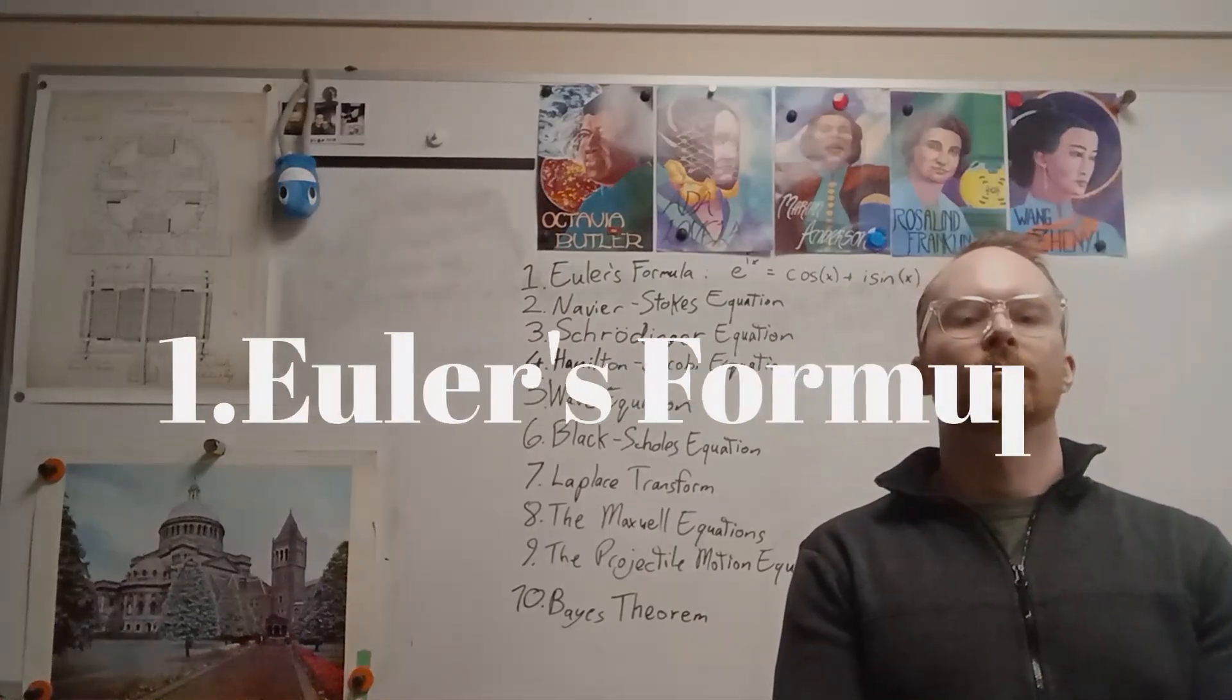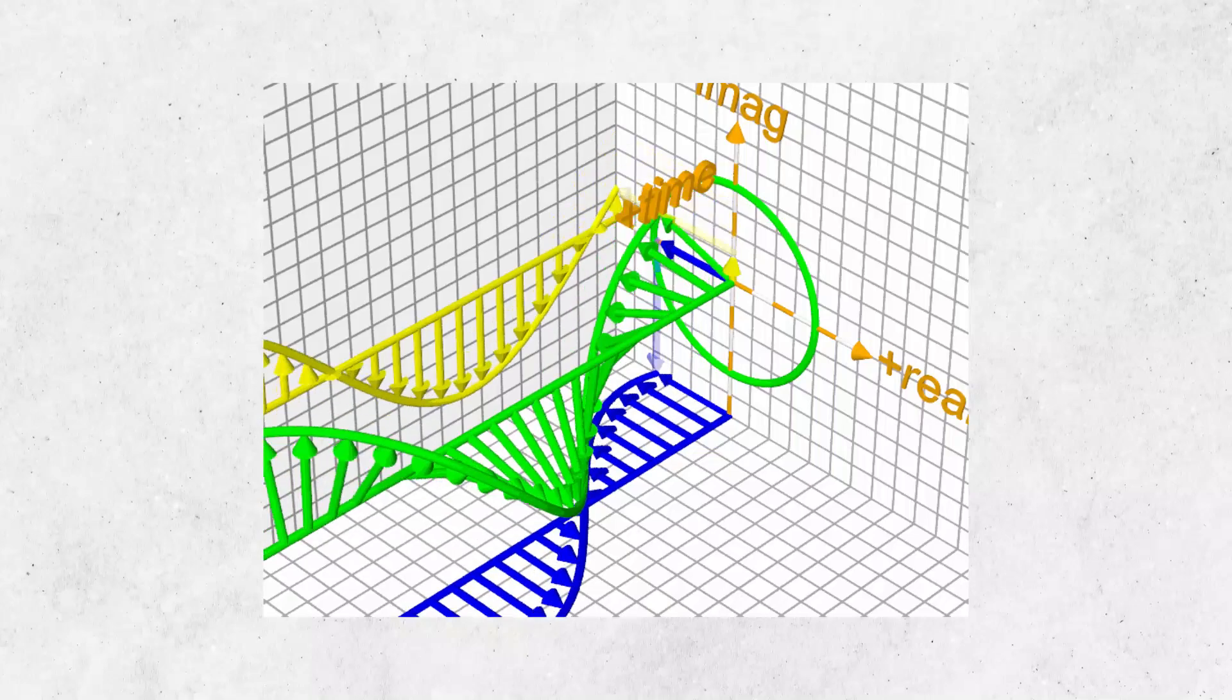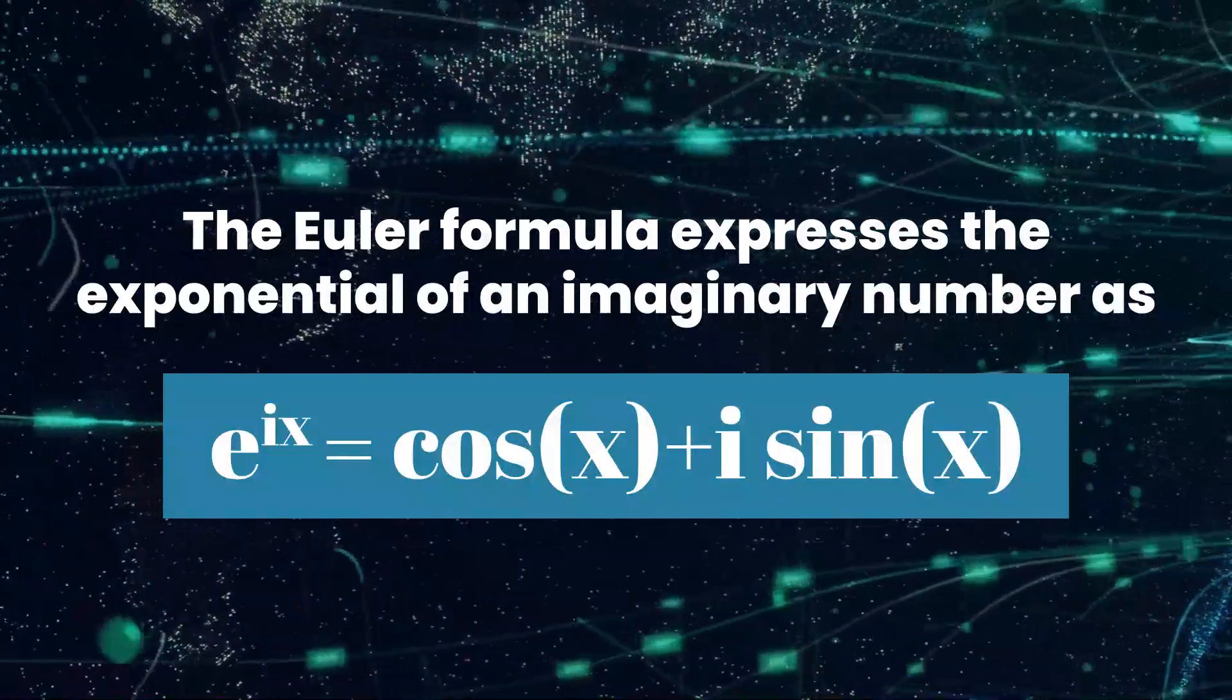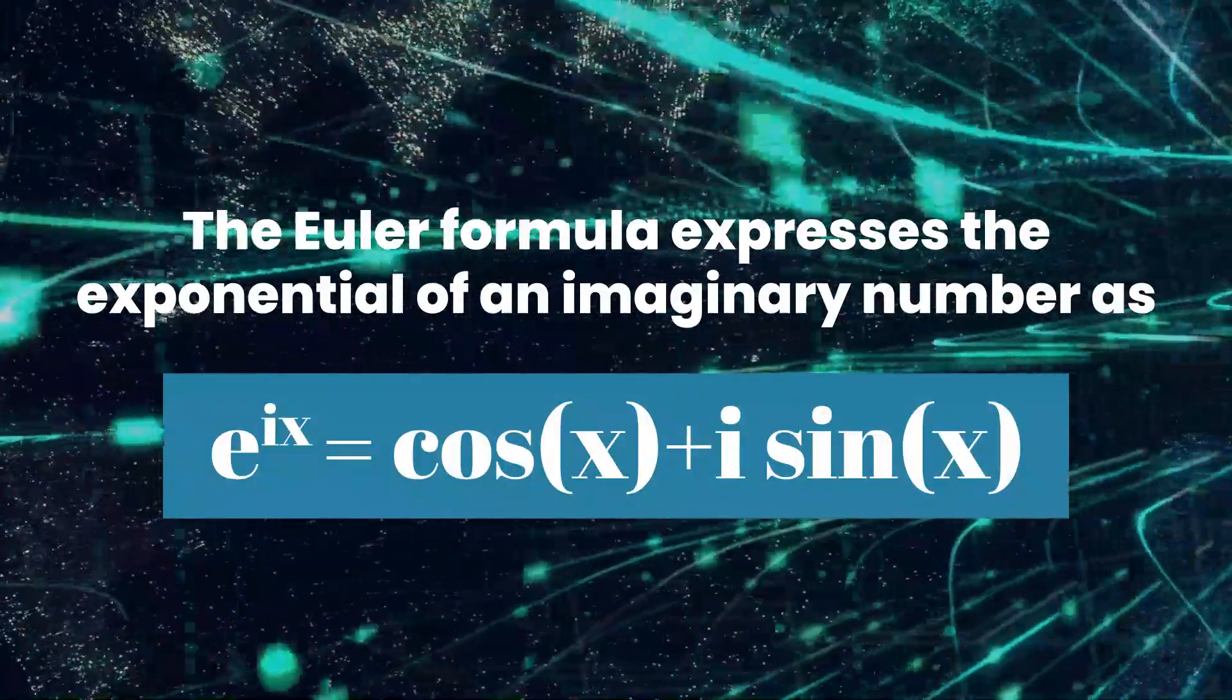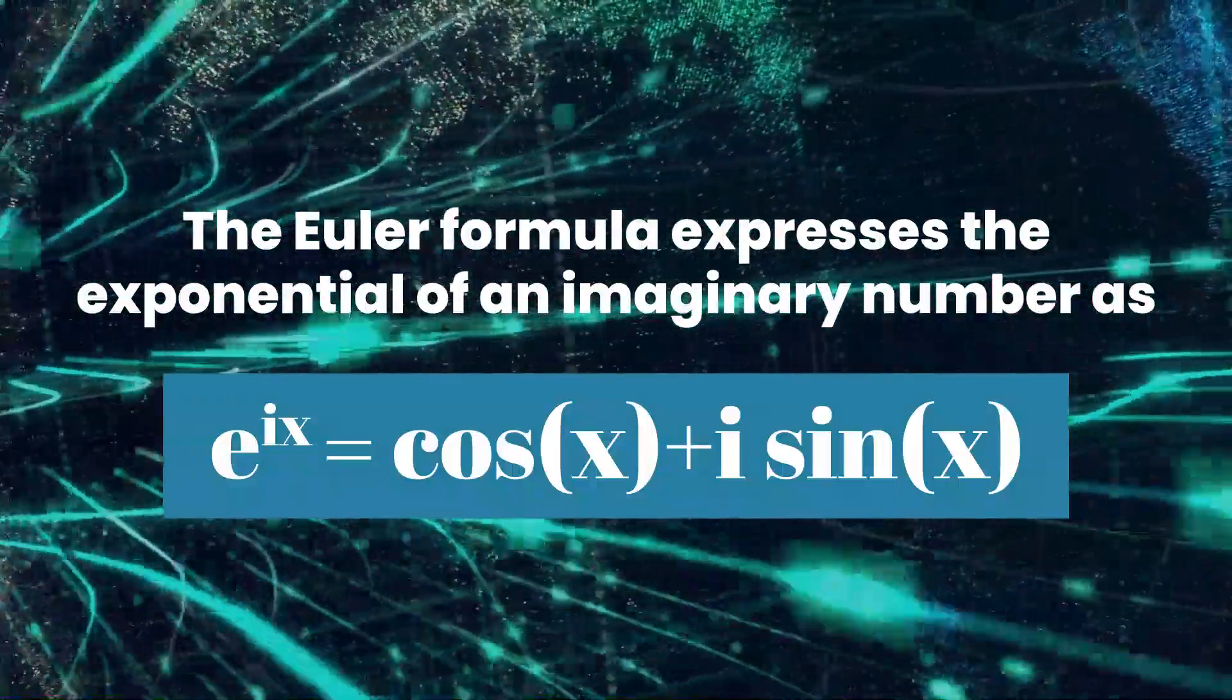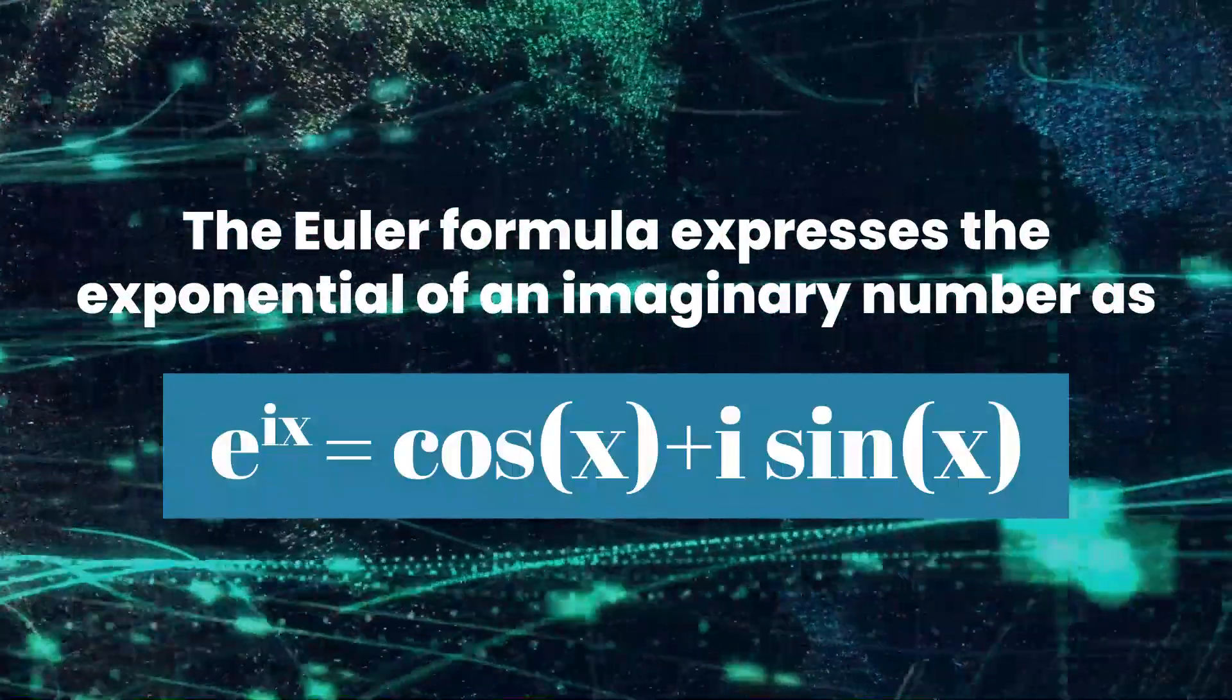Starting with Euler's formula. This equation expresses the relationship between the exponential function and trigonometric functions. It states that e raised to the power of ix is equal to the cosine of x plus i times the sine of x. This formula is widely used in many areas of mathematics and physics.